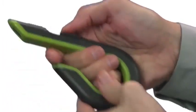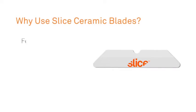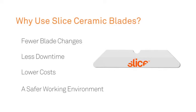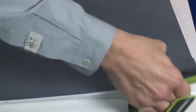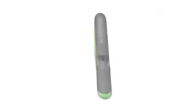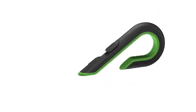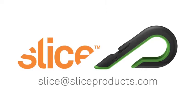By using Slice ceramic blades instead of traditional metal blades, you'll have fewer blade changes, less downtime, lower costs, and most importantly, a safer working environment. The Slice 10503 auto-retractable box cutter is a safer, more effective way to open corrugated cardboard. Shoot us an email and let us know how you're using it.